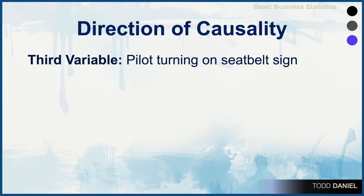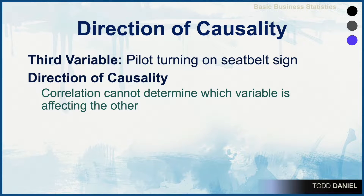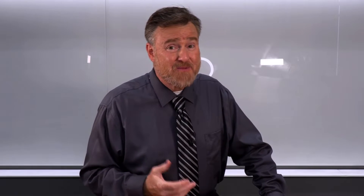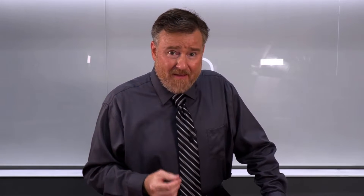Another thing that we cannot determine simply from correlation is the direction of causality. Even if there is a causal link between variables, we can't determine which variable is causing the other to change. If you have dogs, one unpleasant side effect is sometimes when the dog isn't feeling well, the dog throws up and often you'll see grass. Sometimes you'll see a dog eating grass. Is it the grass that's causing the dog to throw up? Or is it that when the dog feels like it's getting nauseous, it tries to feel better by eating the grass?